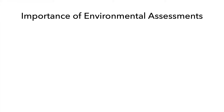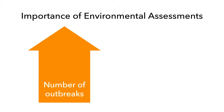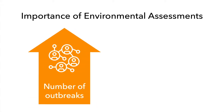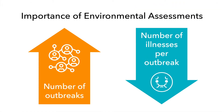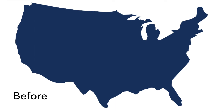In recent years, we've been getting better at detecting outbreaks and detecting them sooner. Therefore, the number of outbreaks has increased, but the number of illnesses per outbreak has drastically decreased. Let's look at this phenomenon in the context of listeria outbreaks.